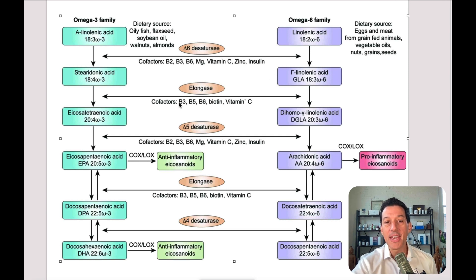Why is this important? Both of these factors lead to the breakdown of these nutrients to make them usable by the body. Your body can't just use omega-3s by themselves without having your B vitamins, magnesium, vitamin C, zinc, and insulin. What about the next step? B3, B5, B6, biotin (which is in the B vitamin family), vitamin C. Next step to get to EPA: B2, B3, B6, magnesium, vitamin C, zinc, insulin. What about from EPA to DHA? More B3, B5, B6, biotin, and vitamin C.